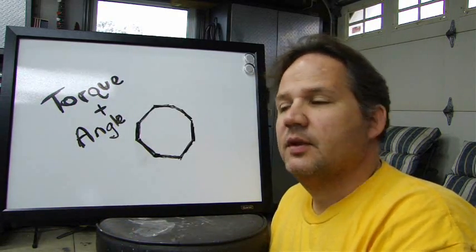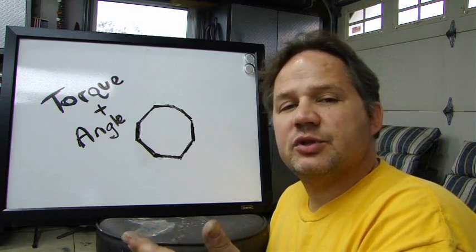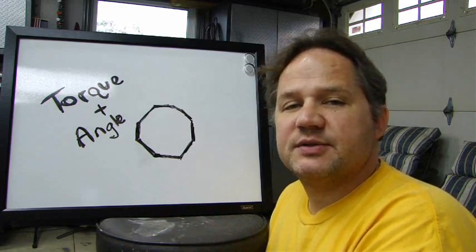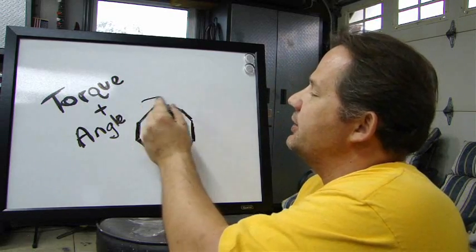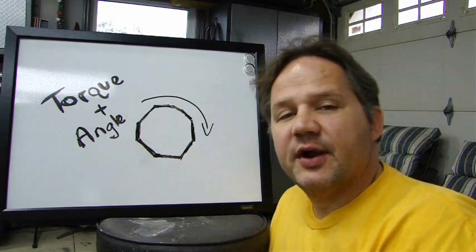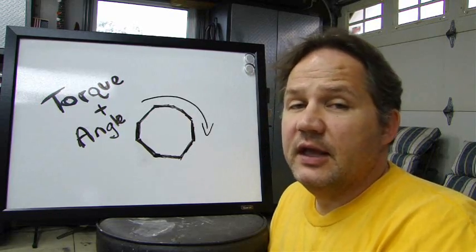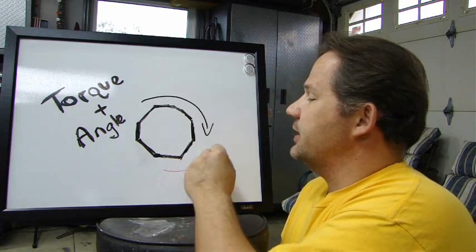Torque is very simple. It's one of Newton's laws. Every action, there's an equal and opposite reaction. Let's say I have a bolt here. And let's say I've got my torque wrench on there, and I'm torquing the bolt in that direction. The equal and opposite reaction is going this direction.